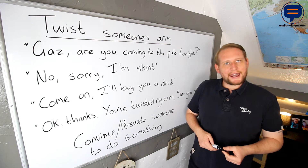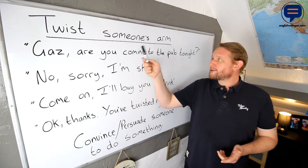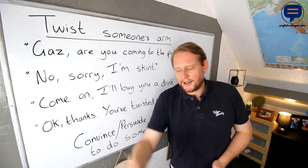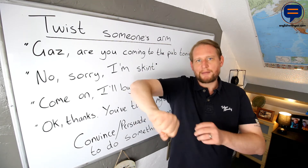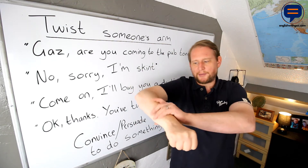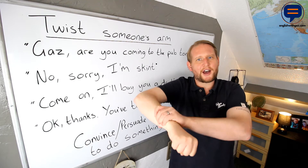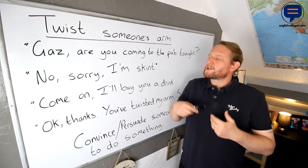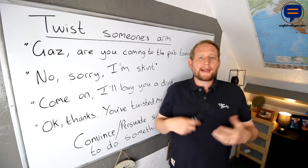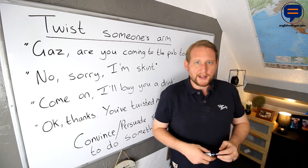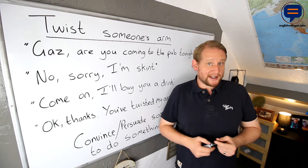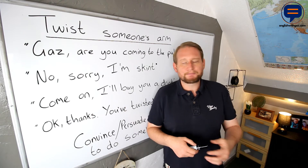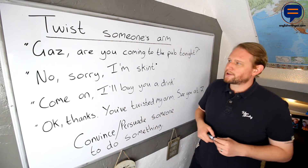Today's idiom is to twist someone's arm. Now twist is like this — I'm twisting my arm. Twist is a verb, to twist something. So I'm going to give you an example. Listen up and see if you can understand what this means from the context of the example.